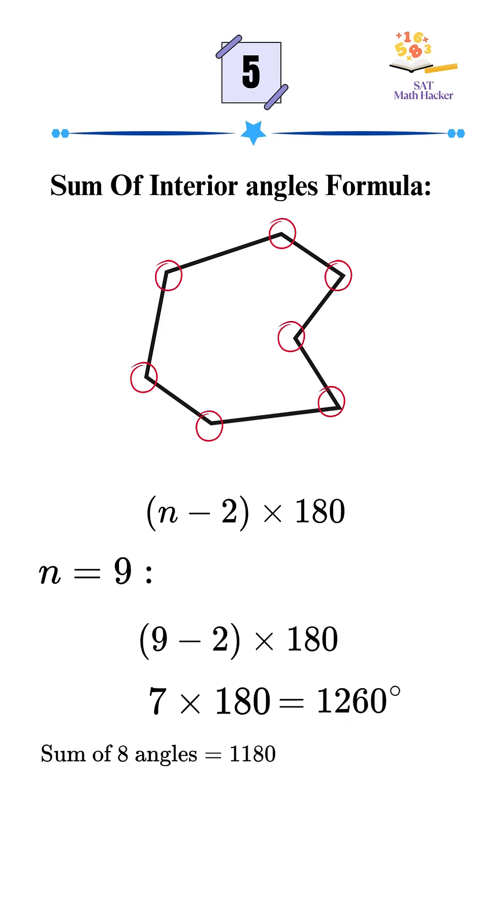Now subtract the sum of the first eight angles. 1,260 minus 1,180 equals 80. So the ninth interior angle is 80 degrees.